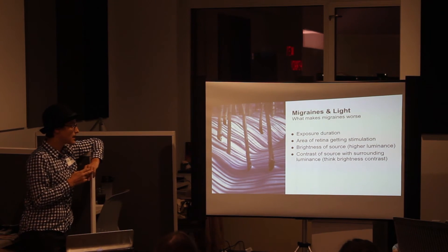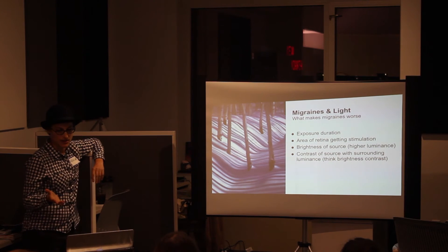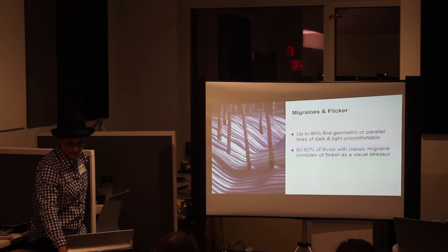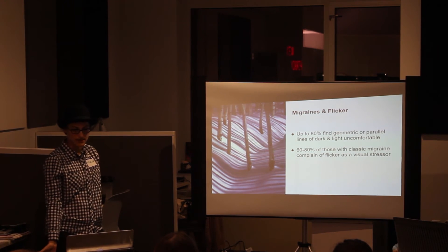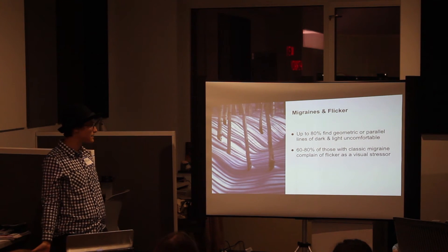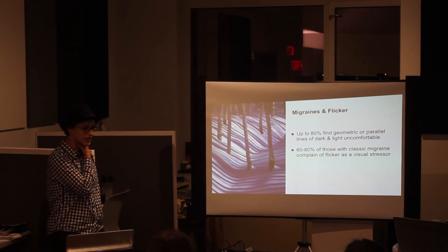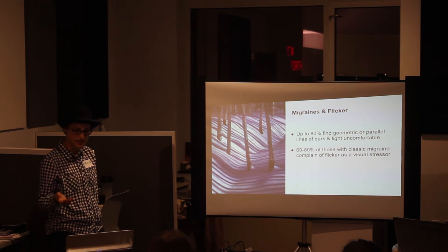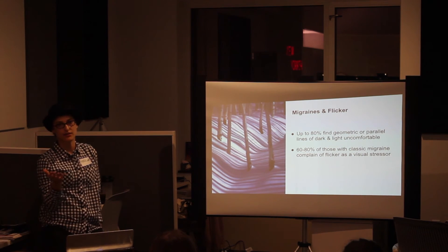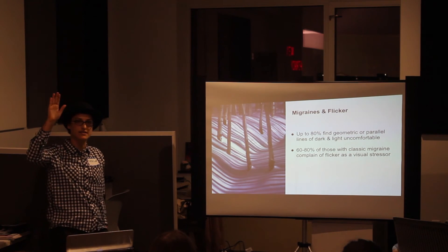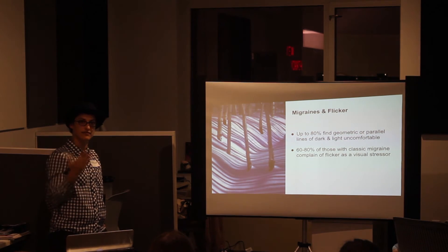Color temperature — or rather wavelength — also plays a role. Up to 60 to 80 percent of those with classic migraines recognize flicker as a visual stressor that triggers an episode. Even scenes like driving down a country road with trees lit from the side by the sun, creating a repetitive black and white pattern, is enough to trigger migraines for some people.